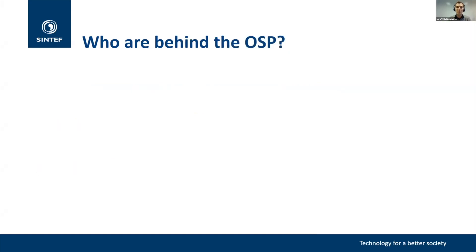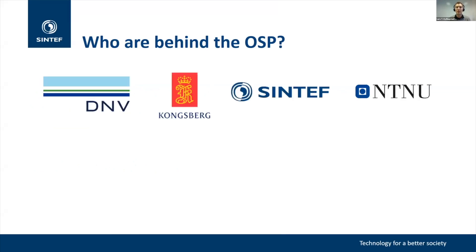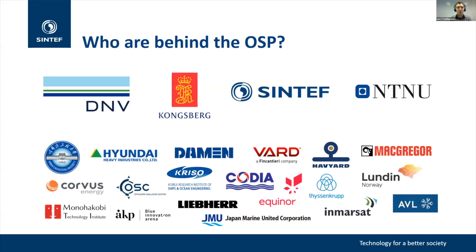The core group behind the OSP consists of four organizations: DNV, who led the project and are the world's largest classification society; Kongsberg, a major technology corporation; Sintef, an independent technology research institute; and NTNU, the Norwegian University of Science and Technology. In addition to these four core partners, the project had support from 19 other major players in the global maritime industry, including technology and equipment suppliers, shipbuilders, energy companies, research institutes, and universities, providing both guidance and financial support.